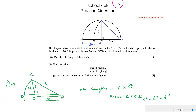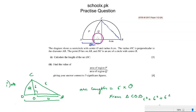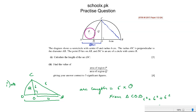Moving on to part 2, we need to find the value of the area of region P over the area of region Q. P can be found by taking the area of quarter circle CAO and subtracting the area of region Q. By doing that we find P and also the area of Q.